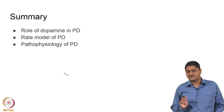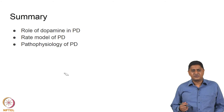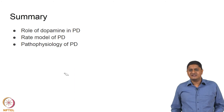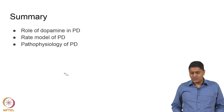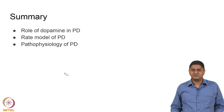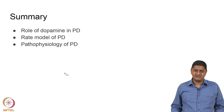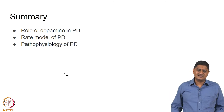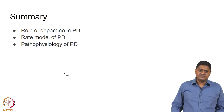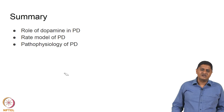Unless and until we understand the pathophysiology clearly, therapeutic approaches are difficult to develop, so a lot more remains to be understood. The exact molecular mechanisms of many of these things are still elusive — for example, why alpha-synuclein continues to build up, what the specific causes are, and what the chain of events leads to that buildup — all such things are continuing to be mysteries. We need to continue to work on this to understand. With this, we come to the end of this lecture. Thank you very much for your attention.